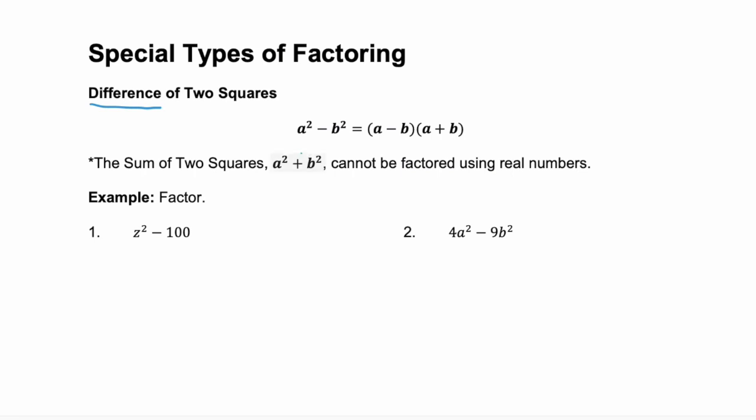These are easy to identify because it's two terms, the first thing squared minus the second thing squared. It'll always be in the format a squared minus b squared, and these always factor to a minus b times a plus b. Now, keep in mind the sum of two squares, a squared plus b squared, can't be factored using real numbers, so don't fall for that trick. Look for a difference or subtraction of two terms where each term is something squared.